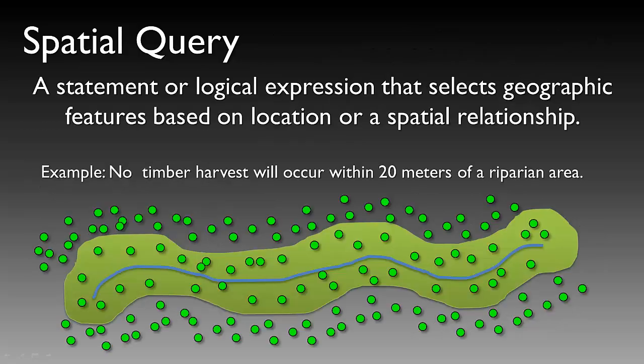A spatial query is a statement or a logical expression that selects geographic features based on location or a spatial relationship. As an example, we would like to identify those trees that occur within 20 meters of a riparian area and restrict those trees from being harvested during a timber harvest operation. Based on the 20 meter buffer around our riparian area, we can then select those points that fall within that buffer and identify those trees as no harvest trees.